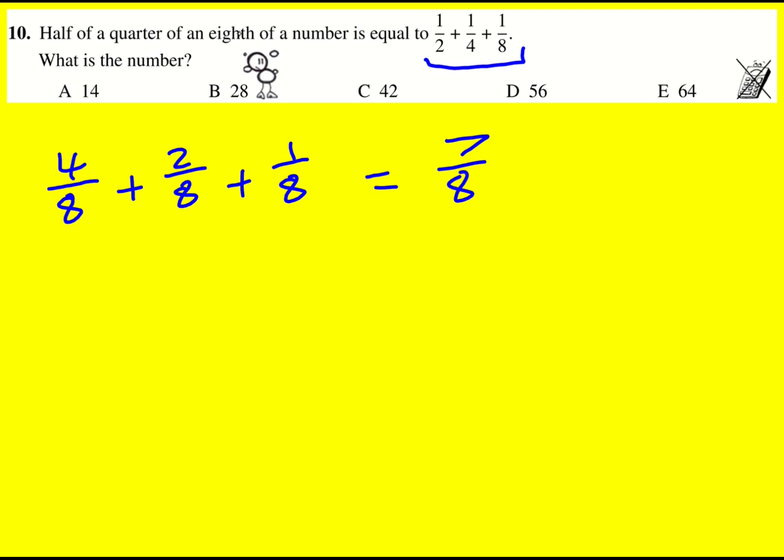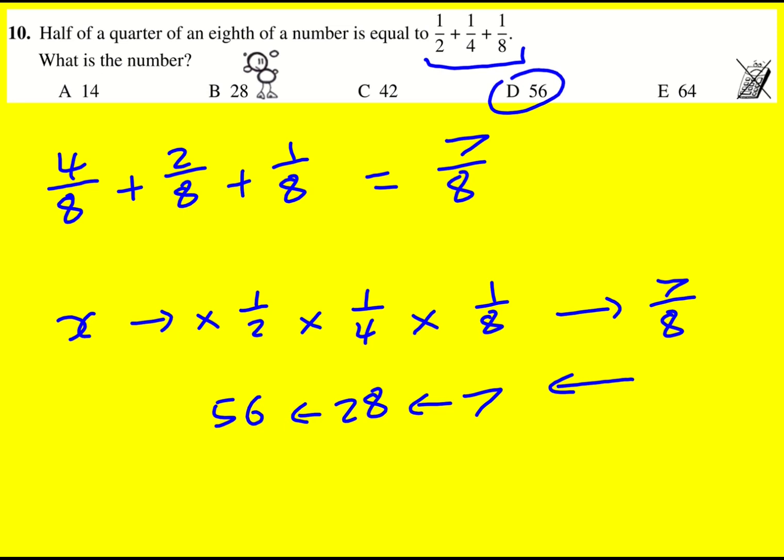So a half of a quarter of an eighth of a number. I can imagine that I've got my number, and then I'm timesing by a half, then by a quarter, then by an eighth, and that's going to get me to seven over eight. So now I can just go the opposite direction. I'm going to times by eight and that will take me to seven. Then times by four, that's going to take me to twenty-eight. Then times by two, that's going to take me to fifty-six, which is the answer. So I've just done the inverse operations.